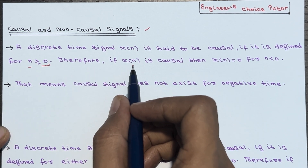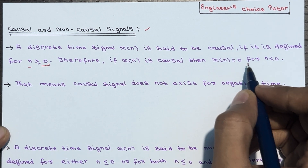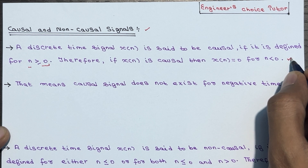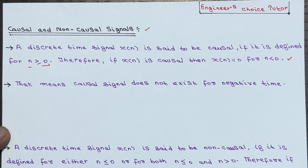Therefore, if x of n is causal, then x of n is equal to 0 for n smaller than 0. Consequently, if x of n is causal it will be equal to 0 for n less than 0. This implies that a causal signal does not exist for negative time values.